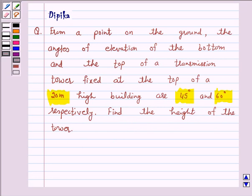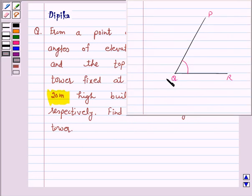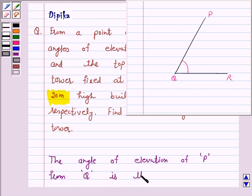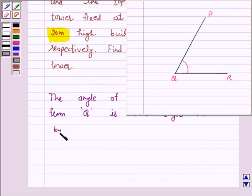Let us first understand the angle of elevation. In this figure, QR is a horizontal line. The angle of elevation of P from Q is the angle formed by PQ with QR.